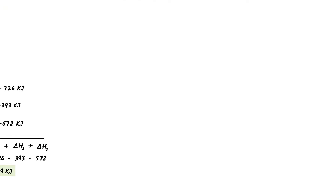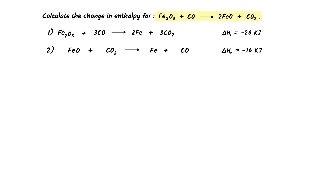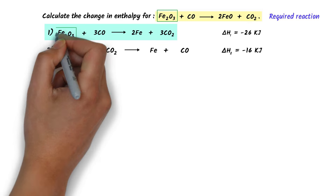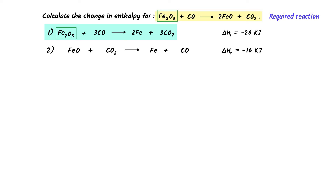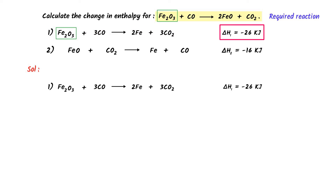Finally, consider this difficult numerical problem: calculate the enthalpy change for the reaction from the following data. I use the fast method. In the required reaction, Fe₂O₃ is present at the left-hand side, and in the first reaction, Fe₂O₃ is also at the left-hand side — the same side. There is one unit of Fe₂O₃ in both. So I write the first reaction as it is: Fe₂O₃ plus 3CO → 2Fe plus 3CO₂. ΔH₁ = −26 kilojoule.